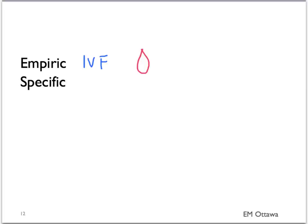In summary, we discussed the treatment of patients with upper GI bleed. The general empiric treatment includes fluid, blood, and anticoagulant reversal. Specific treatment will depend on the cause of the upper GI bleed. In the next part, we will discuss the treatment of patients with lower GI bleed. Thank you for watching.